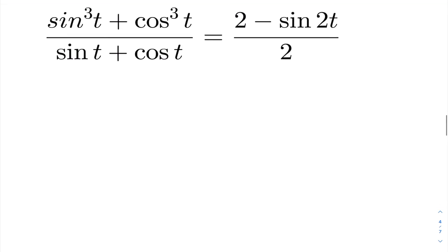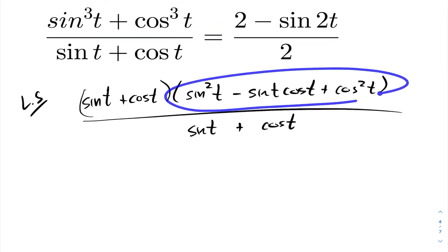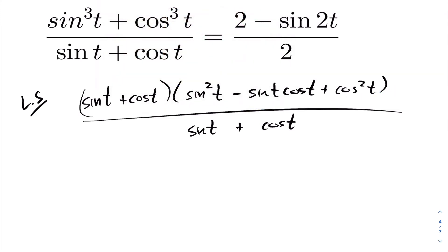In the next example, working with the left hand side, I can see a sum of cubes formula I can apply to the numerator. Hopefully that will cancel with the denominator and give simplification. Applying the sum of cubes formula — x³ + y³ = (x + y)(x² − xy + y²) — to the numerator gives us the following decomposition, and we immediately see cancellation: sin t + cos t cancels from top and bottom.